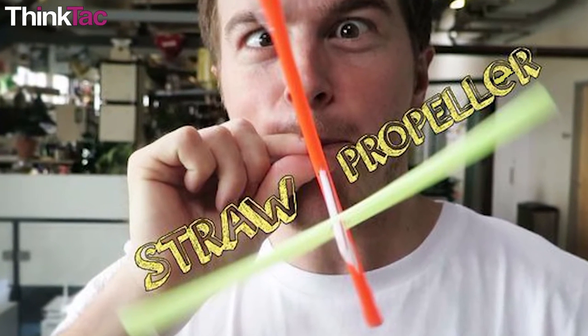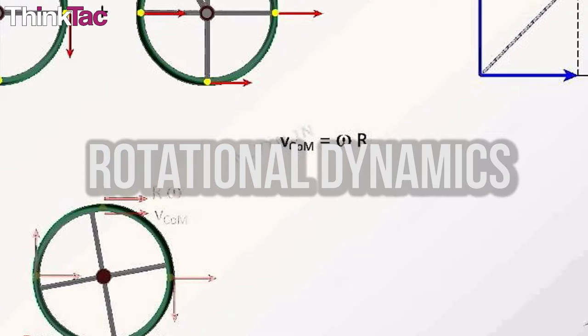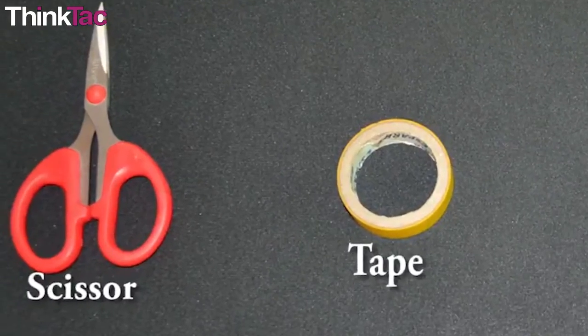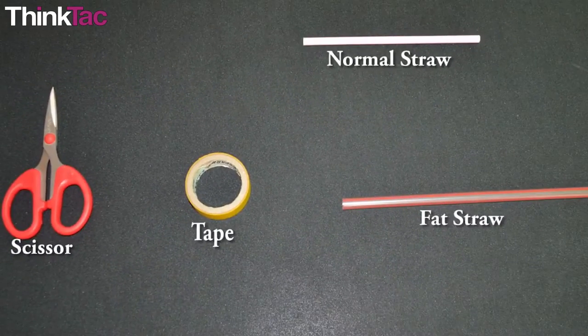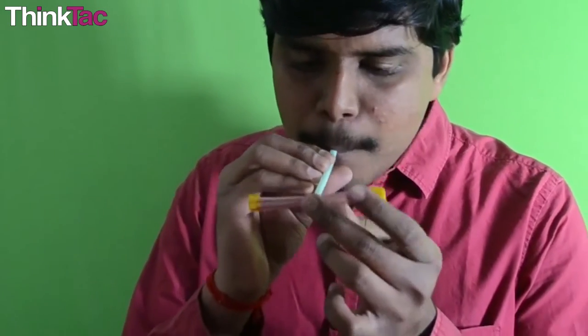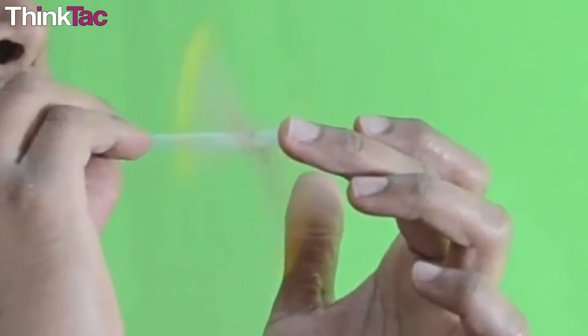An almost unbelievably simple toy to study Newton's second and third laws and rotational dynamics, the straw propeller needs just a couple of straws of different gauge and some tape. By making a handful of holes in the two straw pieces, one is able to create a blowing straw and a propeller that beautifully demonstrates Newton's third law.